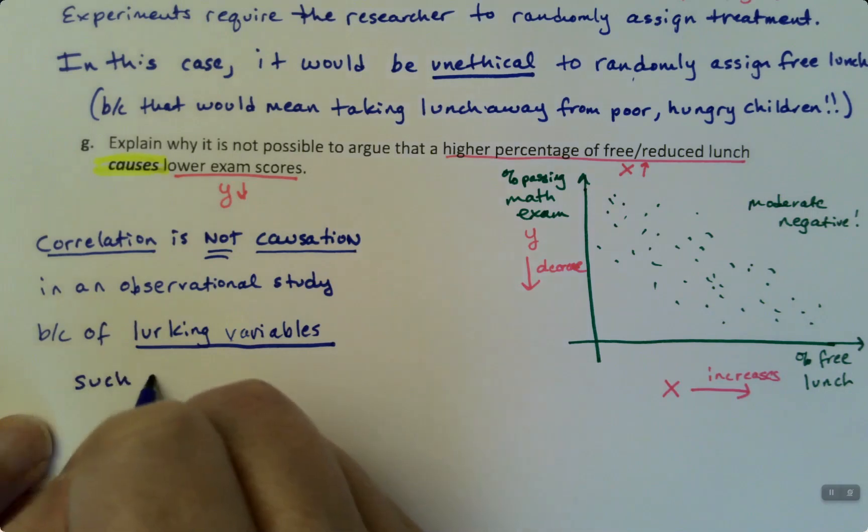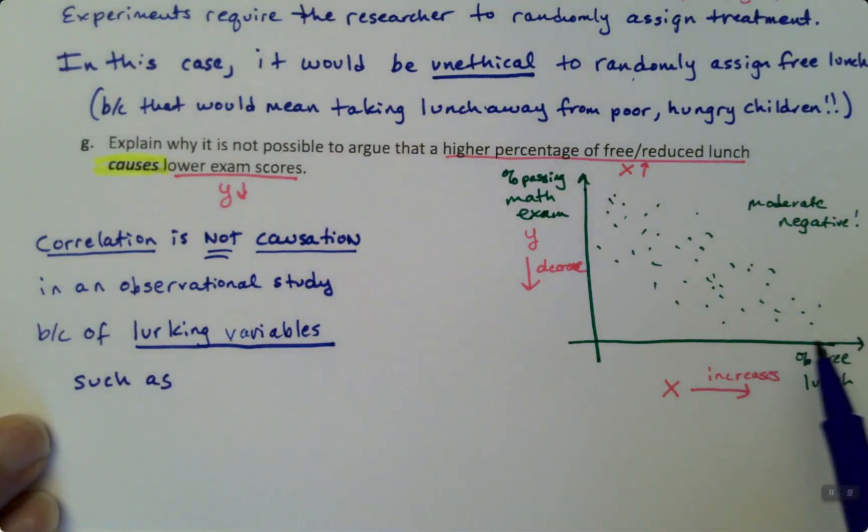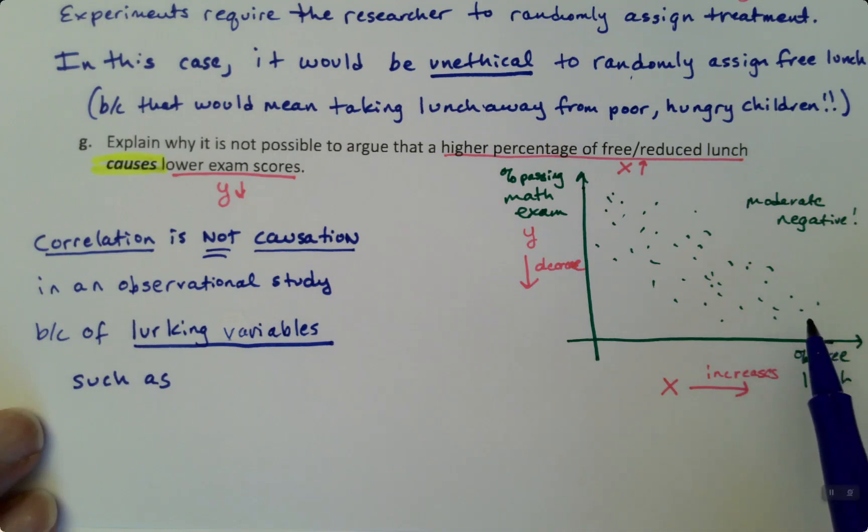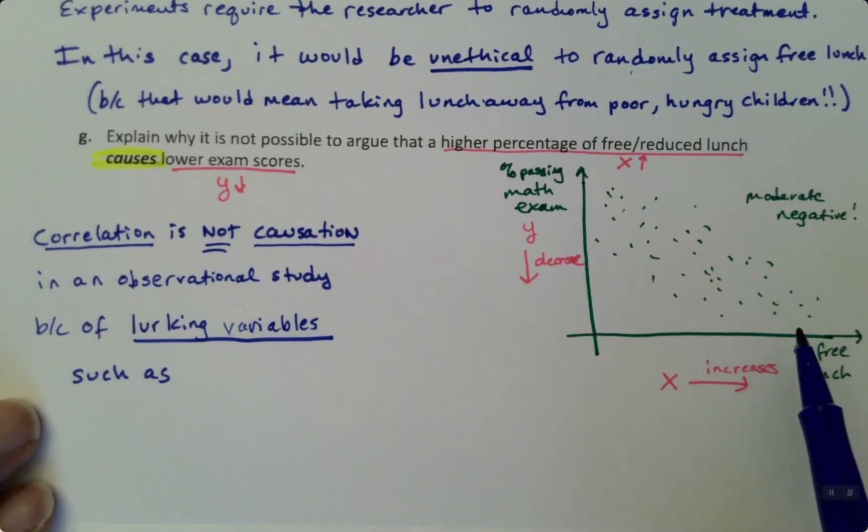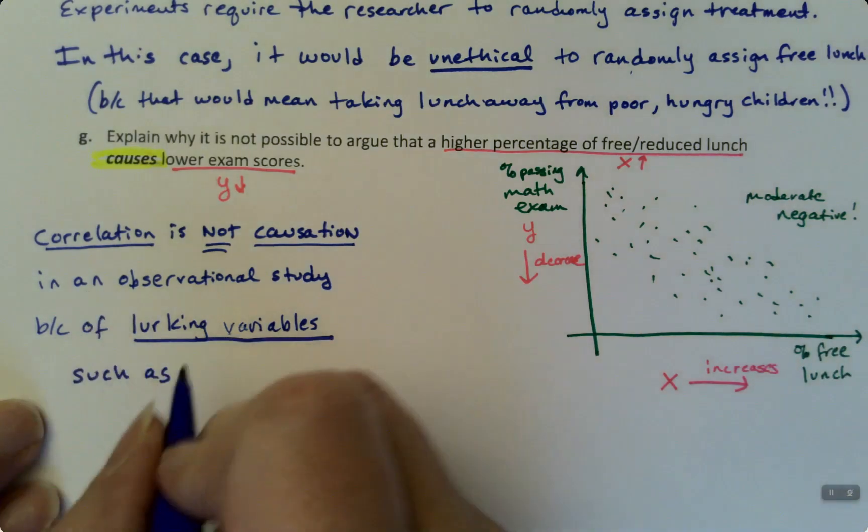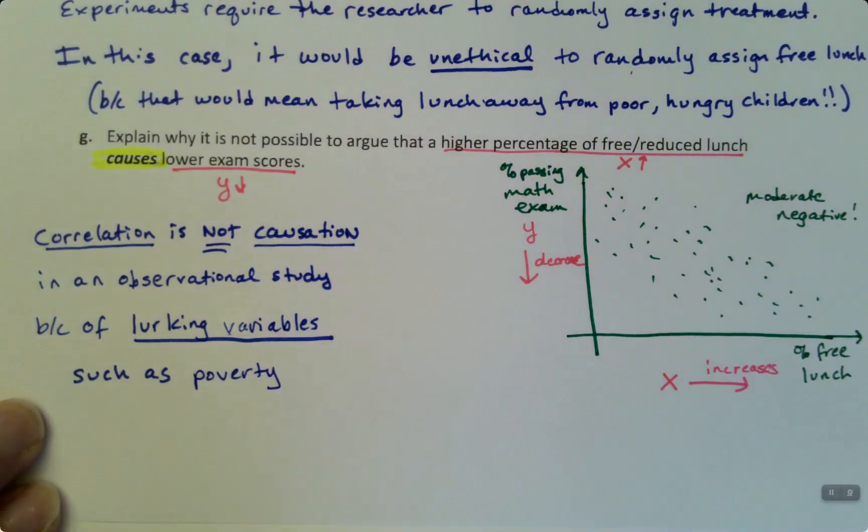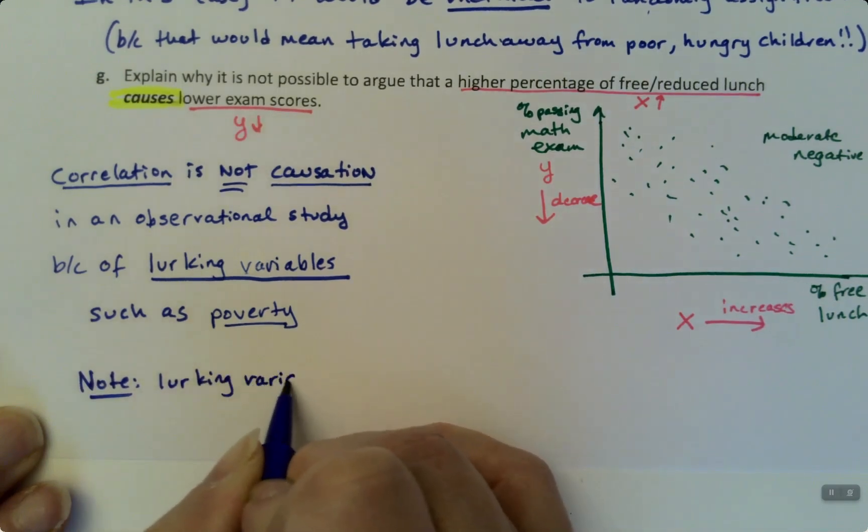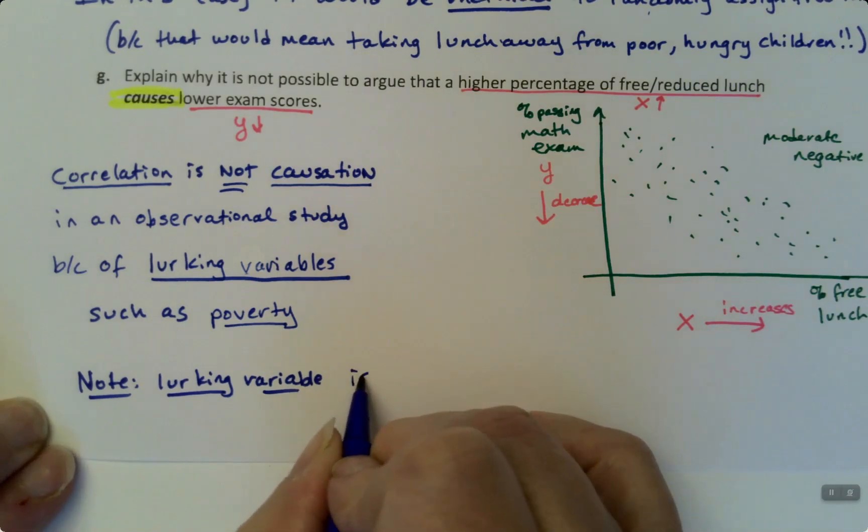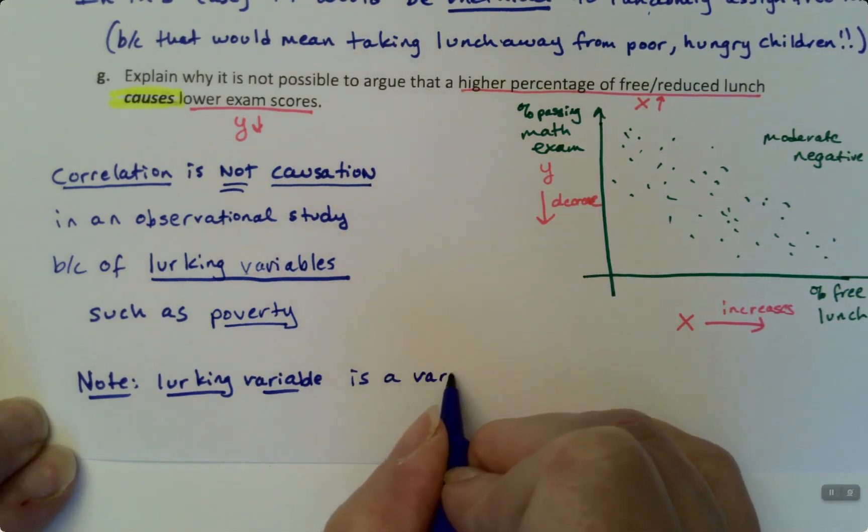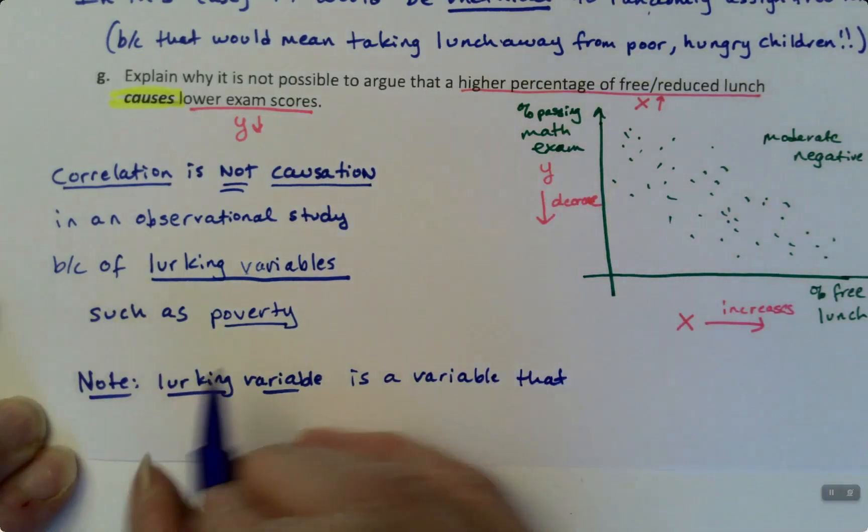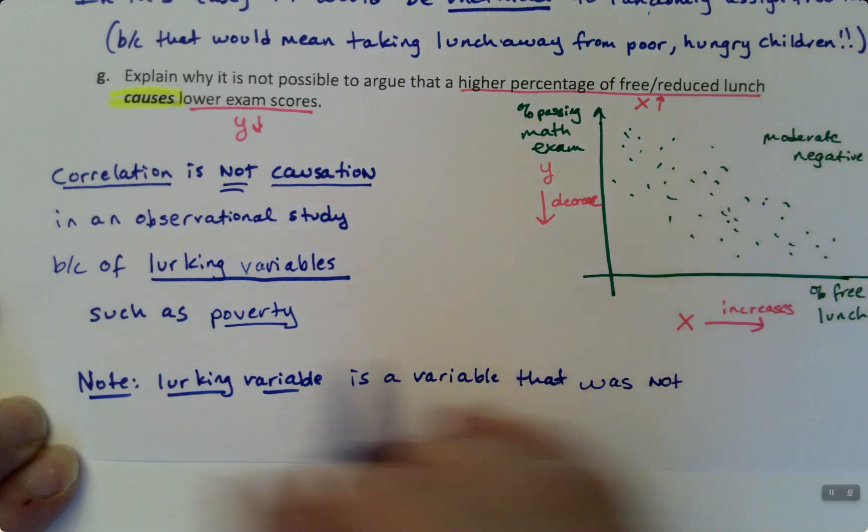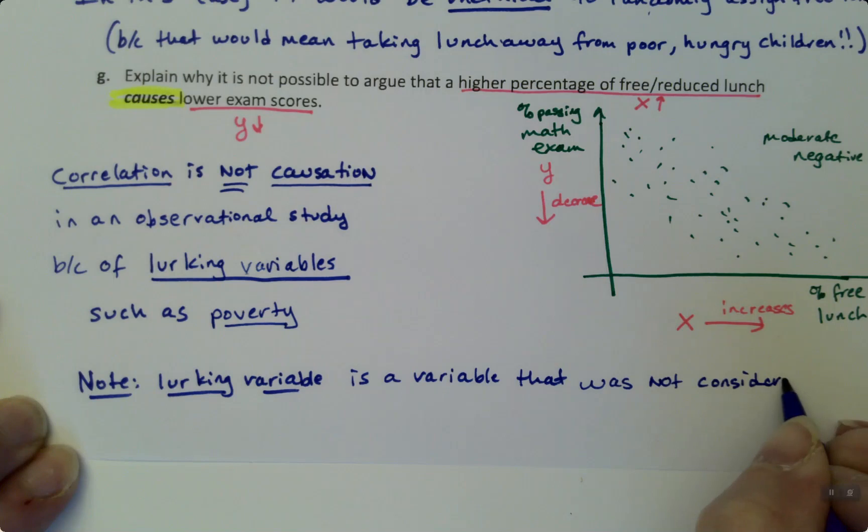There are other factors affecting. Lurking variables, such as, well in this case you can imagine schools that are over here with a high percentage of their kids on free reduced lunch would be poorer. They're in poorer neighborhoods, they have bigger problems with health care, bigger problems with finances, bigger problems with poverty. That's a lurking variable in this case. So let's make a note of what a lurking variable is. A lurking variable is a variable that was not considered in the data set but is affecting both x and y.